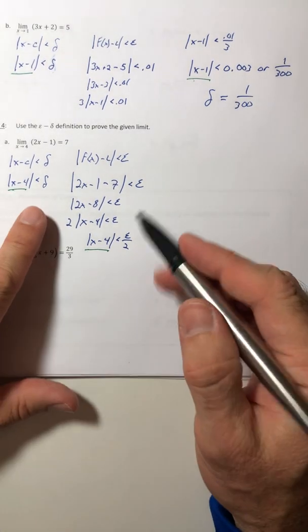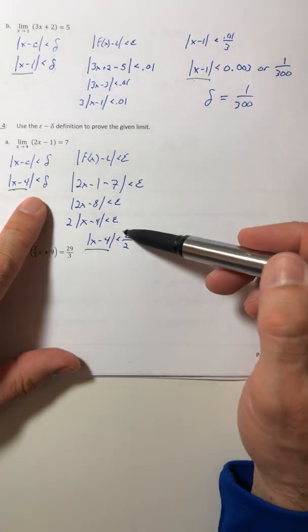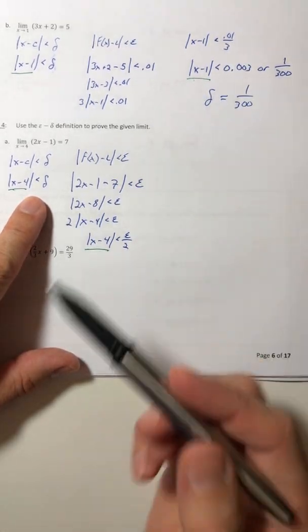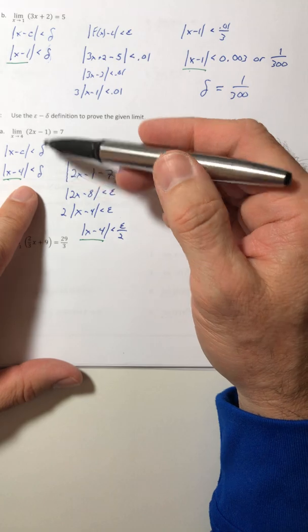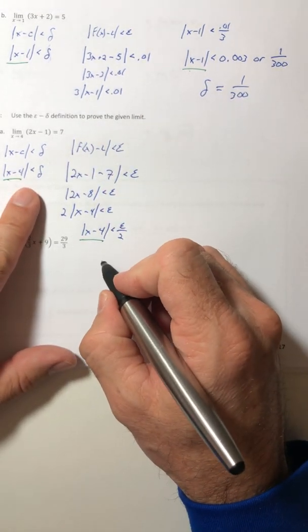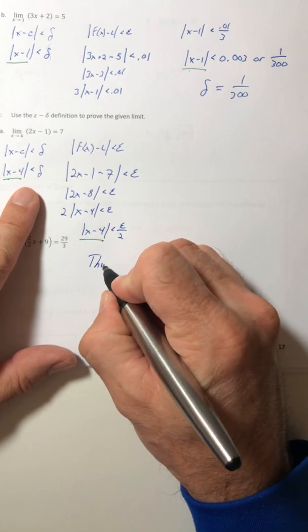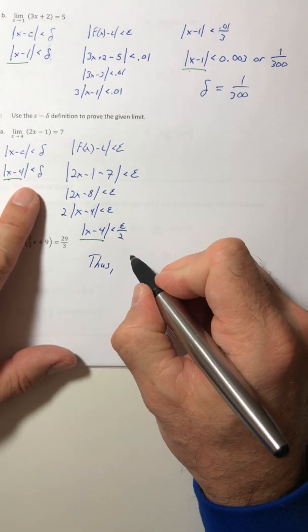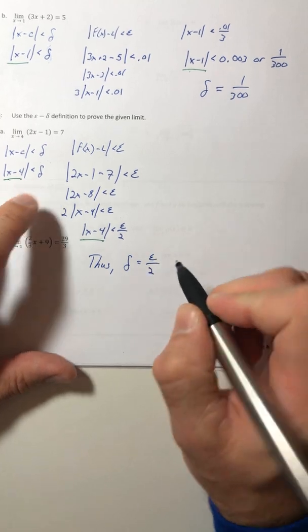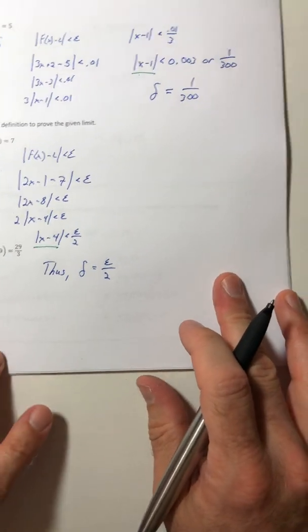So now you are ready to link delta and whatever this is. In the previous example, it was an actual number. But in this case, it's not. Now it's more general. So you say thus, delta equals epsilon over 2. So once you figure out what the delta is in terms of epsilon, then you're going to actually use it.